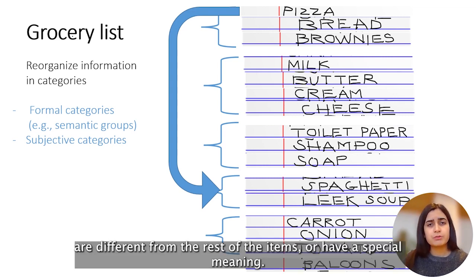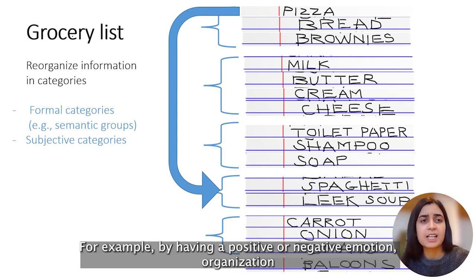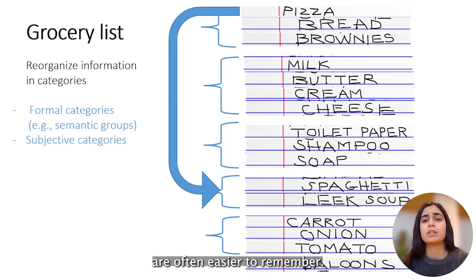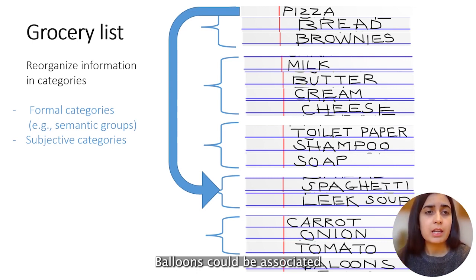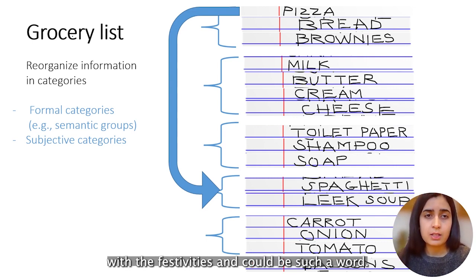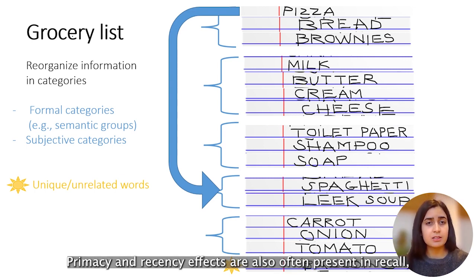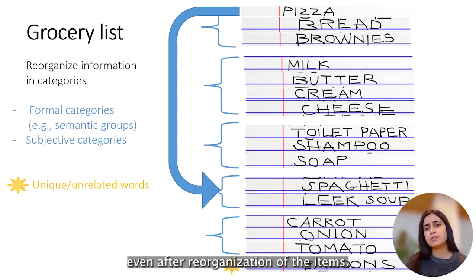Some words that are different from the rest of the items, or that have a special meaning such as a positive or negative emotional connotation, are often easier to remember. For example, balloons could be associated with festivities and could be such a word. Primacy and recency effects are also often present in recall even after reorganization of the items.